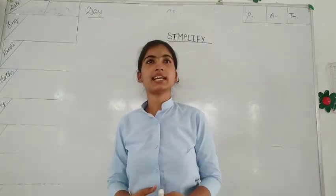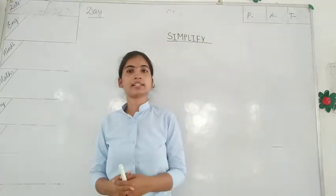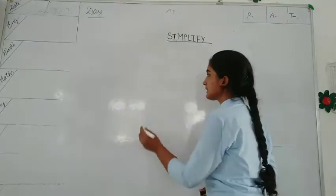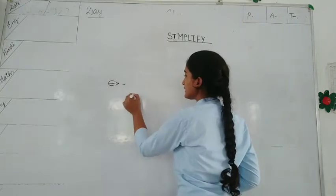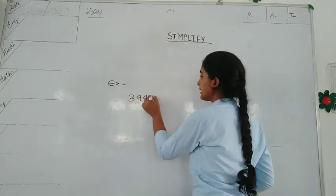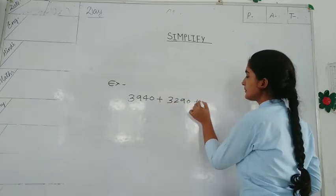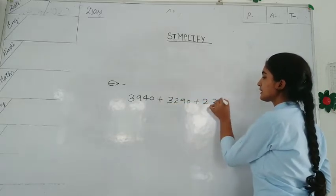Simplify this class. The class is given, we can solve it. Here we can explain the example. For example, we can write the class: 3,940 plus 3,290 plus 2,340.